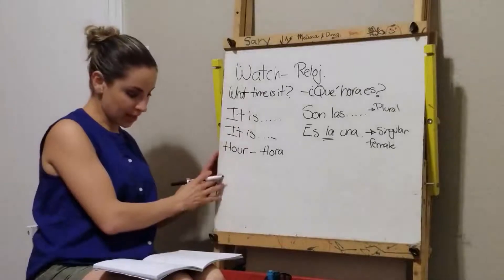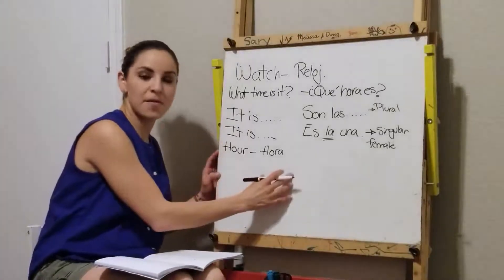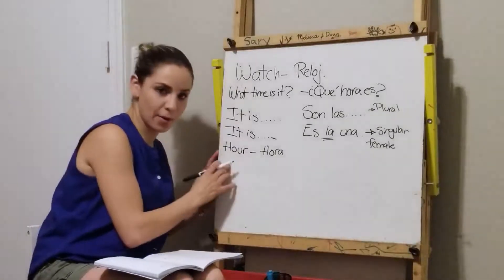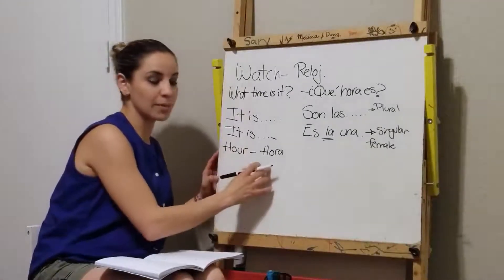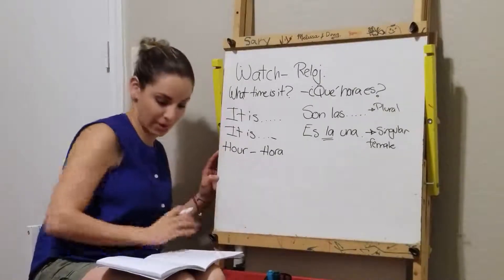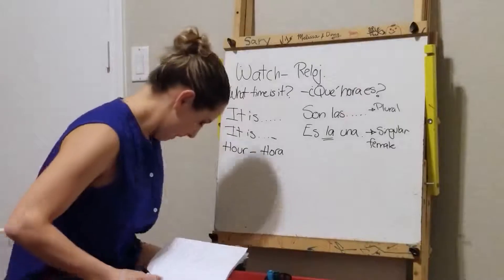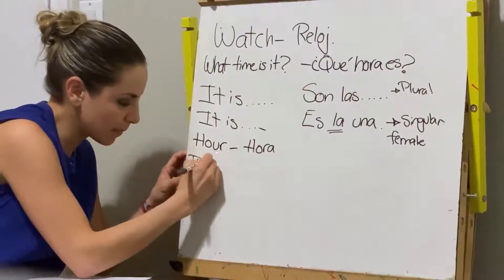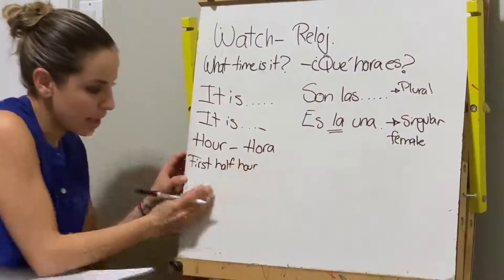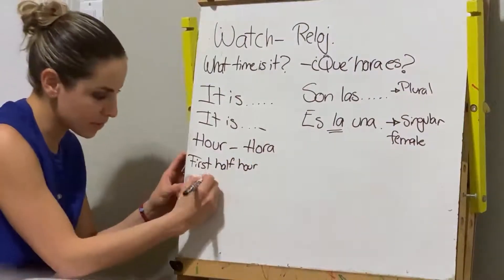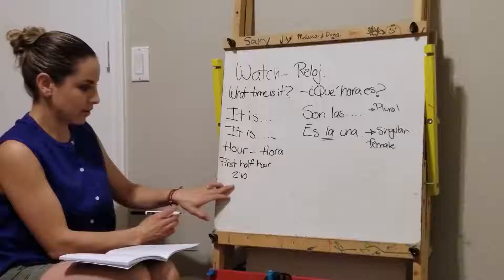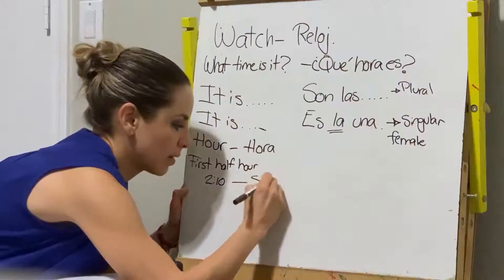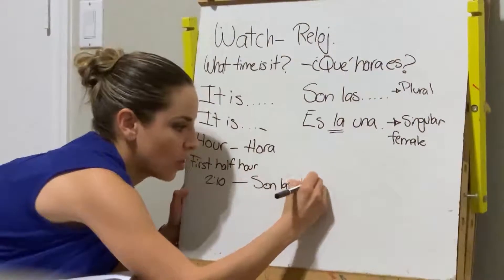In the hour we have the first half hour and the last 15 minutes of the hour. The first half hour is called one way, and the last 15 minutes is called another way. Let's see two ten: Son las dos y diez.